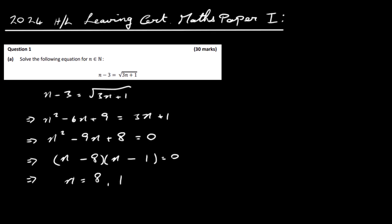Now with these kind of questions, you've got to check both answers. So let's do that here. So let's take n is equal to 8. So we'll put in 8 instead of n, so it's going to be 8 minus 3, square root of 3 times 8 plus 1. 8 minus 3 is 5. Here we have the square root of 3 eights or 24 plus 1, 25. So we have 5 equal to 5. That's fine.